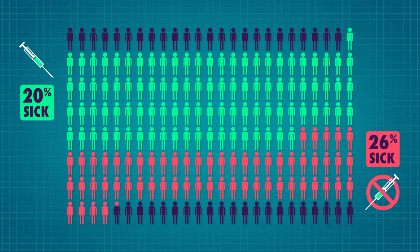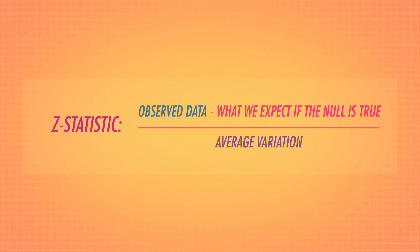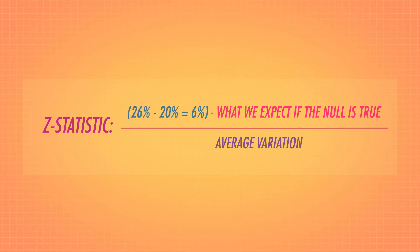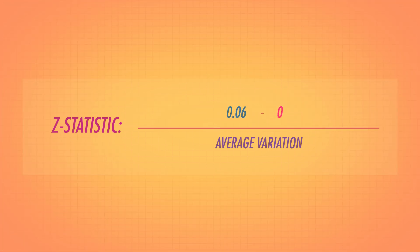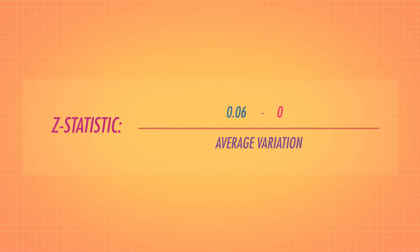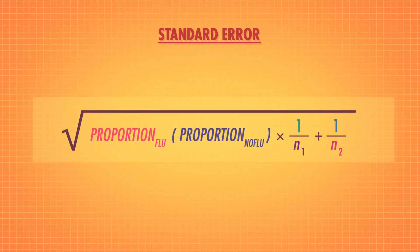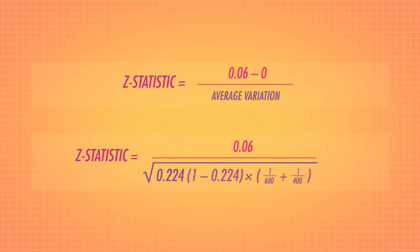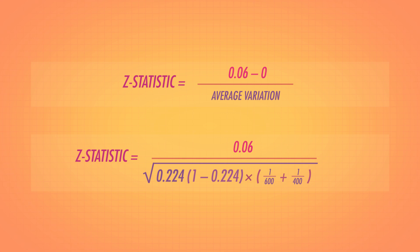It seems like you're more likely to get the flu if you didn't get a flu shot, but we're not sure if this difference is small compared to random variation, or pretty large. To calculate our z-statistic, we first have to remember our general form. There's a 6% difference between the proportion of the vaccinated and unvaccinated groups, and we want to know how different 6% is from 0%. A difference of 0% would mean there's no difference between flu rates between the two groups, so our observed difference is 6 minus 0%, or 6%. The average variation here is the standard error from our sampling distribution. If our observed difference of 6% is large compared to the standard error — the amount of variation we expect by chance — we consider the difference to be statistically significant.